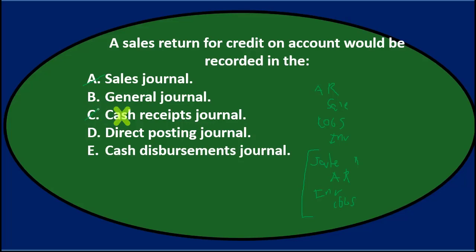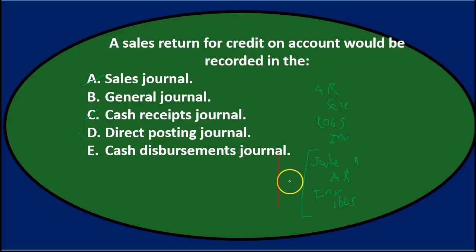D is the Direct Posting Journal — I'm not sure that's a real thing, so I'll keep it for now. E is the Cash Disbursements Journal, and again, there's no cash in this journal entry, so it can't go to either of the cash journals.